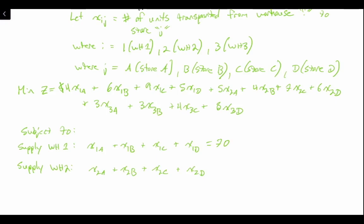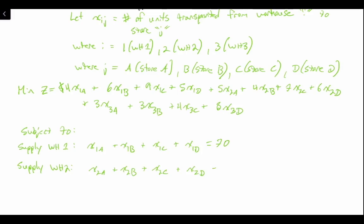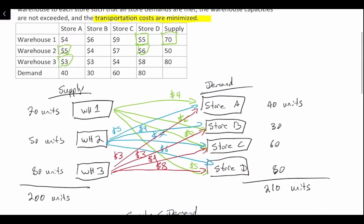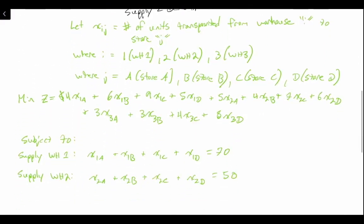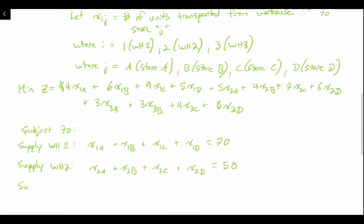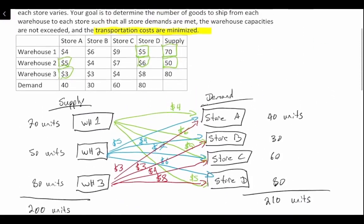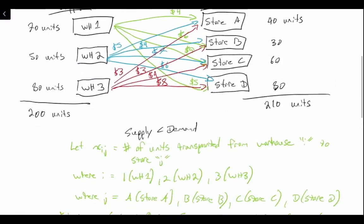For supply at warehouse two: x2A plus x2B plus x2C plus x2D equals 50 — the total supply available at warehouse two. And supply at warehouse three: x3A plus x3B plus x3C plus x3D equals 80.